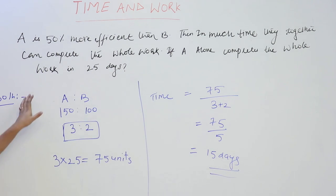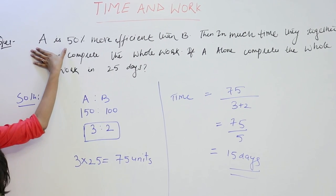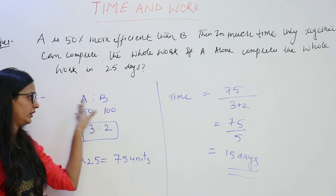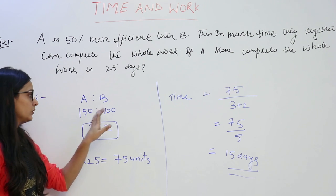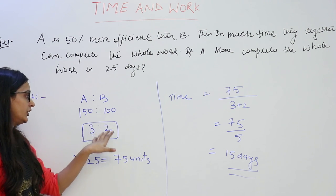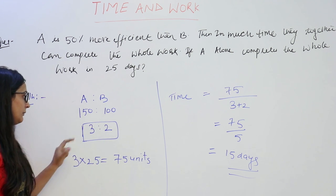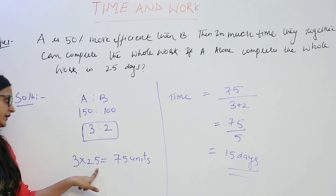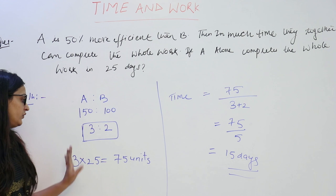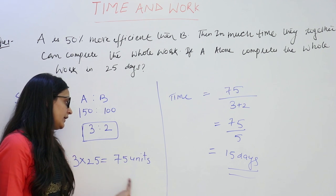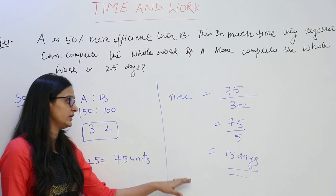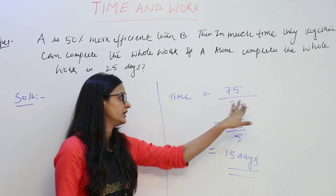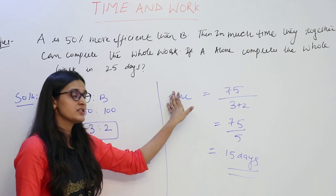I repeat: A's efficiency is 50% more than B's. We assumed B's efficiency as 100% so A's is 150%, giving ratio 3:2. We multiplied A's efficiency by the number of days to get the total unit of work (75). Then we divided the total work by the combined efficiency of A and B together to get the number of days in which both can complete the work.